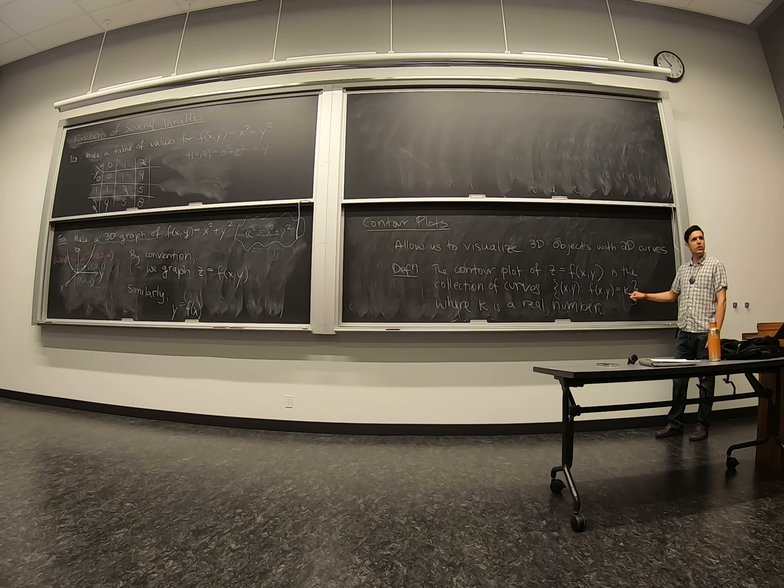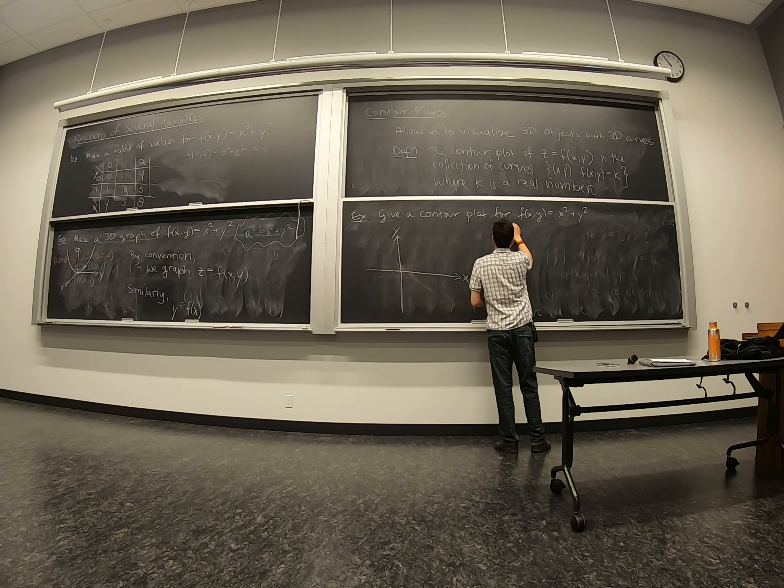So let's apply this to the same function that we've been looking at. We have a contour plot for x squared plus y squared. So we'll plot this for different values of k until we get a sense of what the graph looks like.